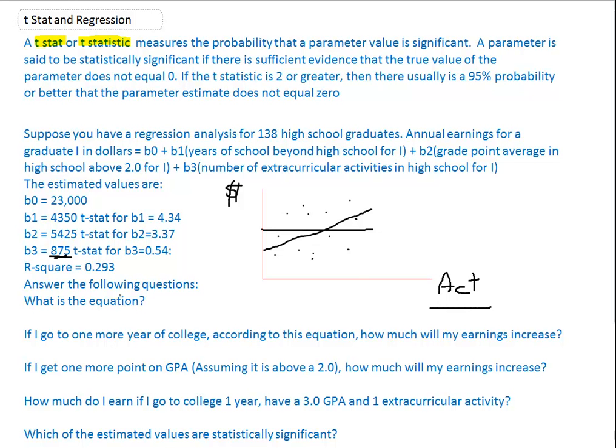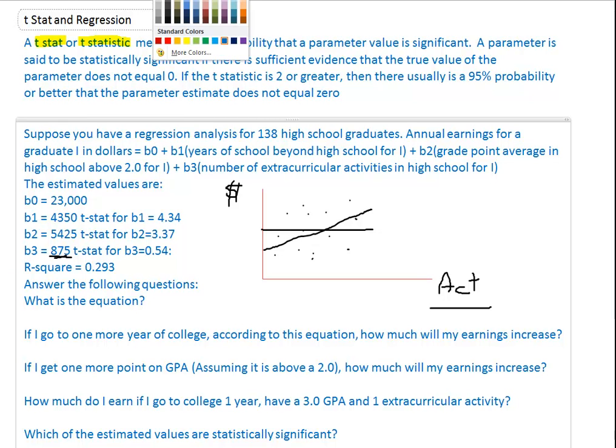So let's answer some of these questions. What is your equation? Well, your equation would equal that, let me type it in here, because I want to. And I'm going to put it in red. So our equation is earnings, which is our annual earnings for a graduate I in dollars, but can I just shorten that to earnings, is equal to, we need an intercept. Intercept looks like it's 23,000, plus we need a parameter, B1, which looks like 4,350, times B1.